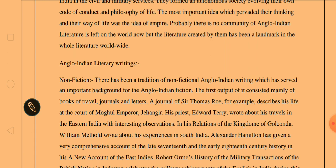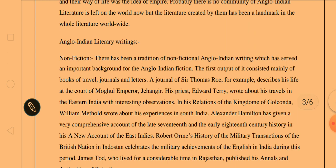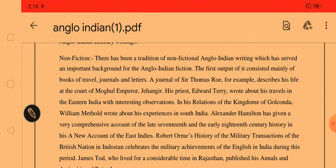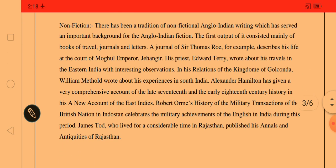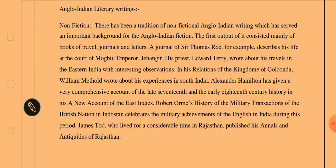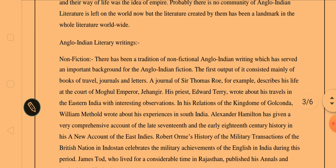There is no Anglo-Indian community left in the world as we know, but the literature created by them has been a landmark in the whole of world literature. There are a few writers who are still writing about India — we even have the living legend Ruskin Bond, who is still living in India. Let's move on to the Anglo-Indian literary writings.